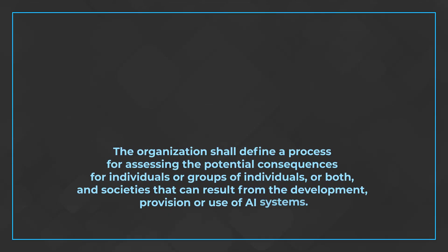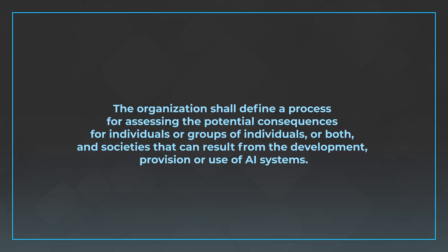That requirement reads: the organization shall define a process for assessing the potential consequences for individuals or groups of individuals or both, and societies, that can result from the development, provision, or use of AI systems. What this requirement is asking you to do is ultimately zoom out and look outside of the consequences of your organization and focus solely on those data subjects and society as a whole. It's a really big ask — you're going to have to spend some time planning for this one.